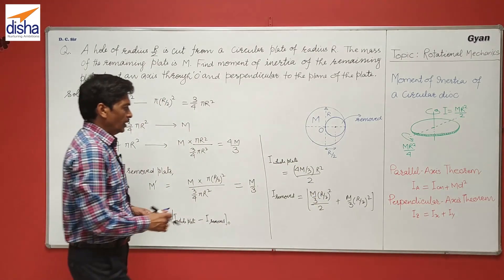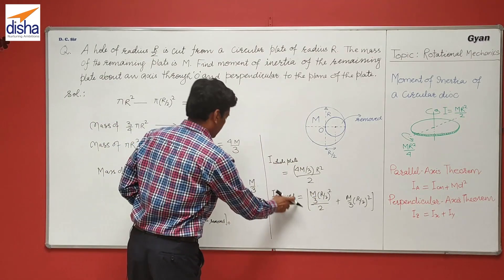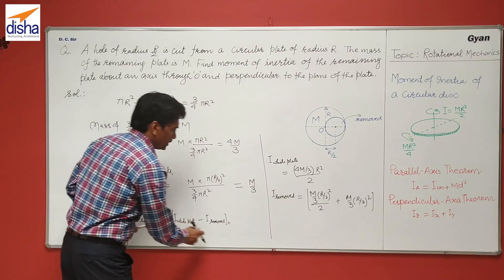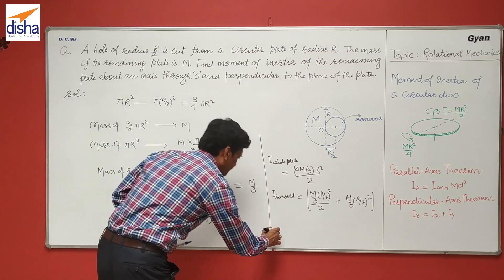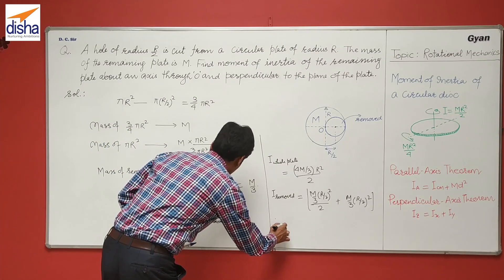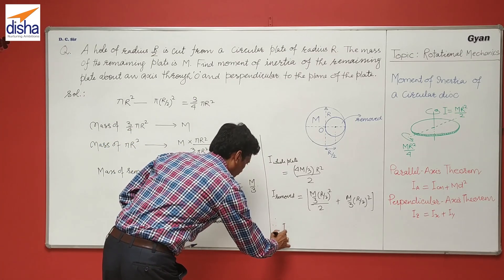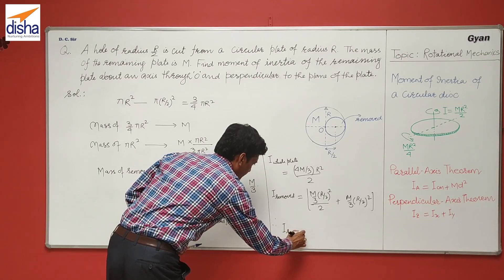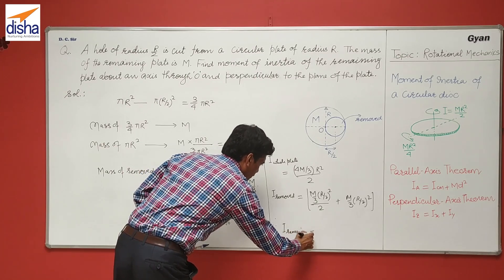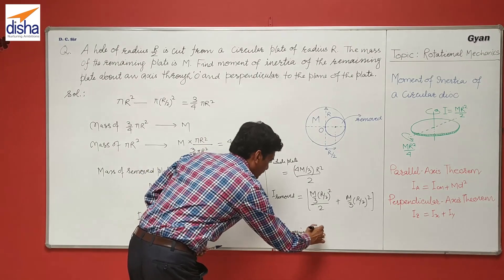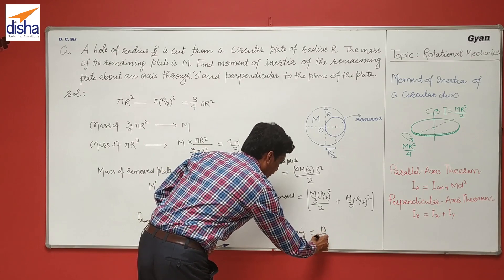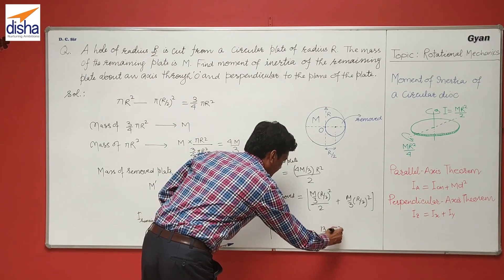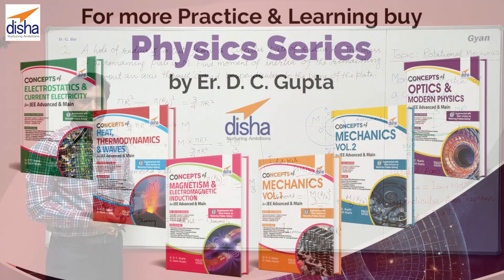Now substituting the values of the whole disk and removed plate moments of inertia into the equation, you will find that the moment of inertia of the remaining plate equals 30/24 MR squared.